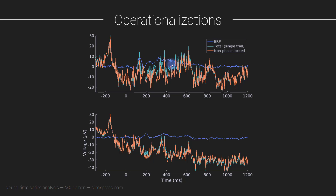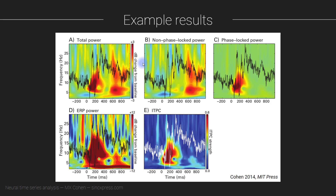Once you've separated these parts of the signal, you can make several time-frequency plots from the same channel. Here you see the total power with the ERP overlaid. Here is the non-phase-locked power — and note that the ERP overlaid here is actually the phase-locked ERP, not an ERP of the non-phase-locked signal, because by definition the trial average of the non-phase-locked signal is zero — it's a flat line — since we subtracted the ERP from each individual trial.